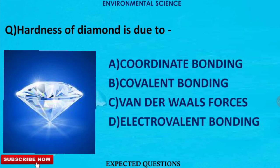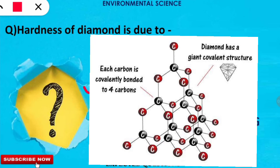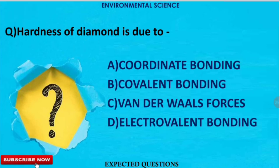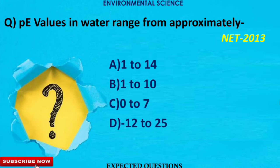The next question is: the hardness of diamond is due to which of the following reason? The correct answer is option B — covalent bonding, that is the bonding due to the sharing of electrons, is the reason why diamond is so hard. Diamond is an allotrope of carbon — you should remember that.